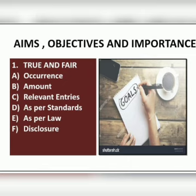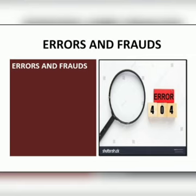Our next topic is errors and fraud. An important objective of auditing is to detect error and fraud in the accounts. Vouching helps an auditor to achieve this objective. Vouching helps an auditor to detect errors in recording transactions — for example, error of commission, error of omission, or error of principle. Vouching ensures the arithmetical accuracy of books of account. Vouching also helps in detection of frauds by manipulation of records. Thus, vouching is a very important procedure which helps the auditor to achieve both basic objectives of auditing: to ascertain whether accounts are true and fair, and to detect errors and frauds.